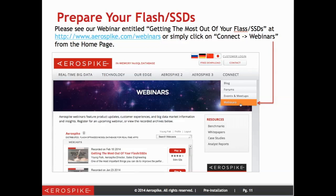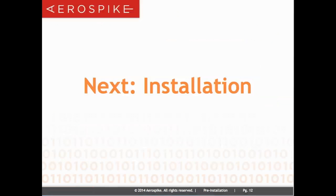Finally, if you do want to use flash or SSDs, the easiest way to get more information is to go to our webinar that talks about how to actually test and configure your SSDs. Simply go to our website and look at the home page — on the right hand side there is a button that says Connect, then go to Webinars, or simply go to http://www.aerospike.com/webinars. Look for the one titled 'Getting the Most Out of Your Flash SSDs.' And once you've done all of that, you're ready to do the installation.